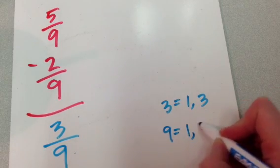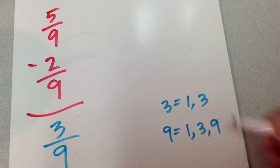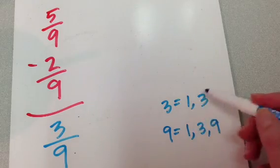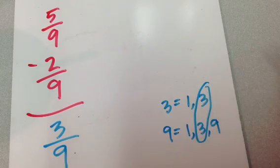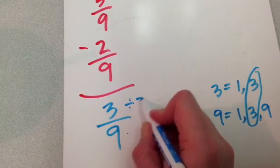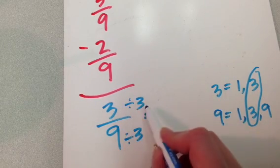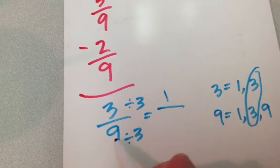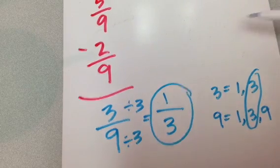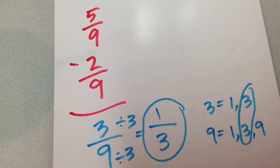And we'll list out the factors for 9 here also. 1 times 9 is 9, and 3 times 3 is 9. So, here are our factors. And look, there's 3 on both of them. So, what I'm going to do is come back over here, divide a 3 out of both of these. 3 divided by 3 is 1. 9 divided by 3 is 3. And there is my answer. So, 5 ninths minus 2 ninths is actually 1 third.